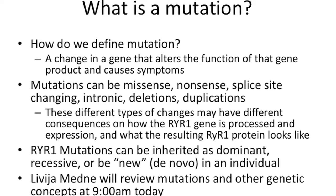What is a mutation? A mutation is a change in a gene or genetic material that alters structure and function in a way that leads to disease. Mutations can come in many different varieties — you may have been told that you have a missense mutation, a nonsense mutation, a deletion, or a duplication. These are all different types of mutation. Mutations can also come in different inheritance patterns: dominant, recessive, or new — de novo. Livia Medney is going to discuss this in quite a bit of detail.